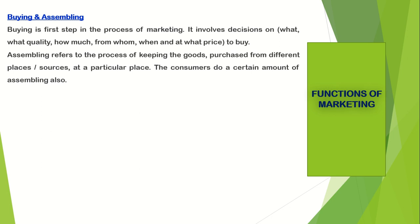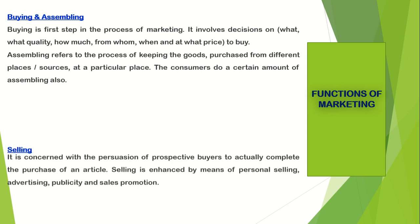The consumers do a certain amount of assembling also. When we buy certain things for our personal requirements from different sources and assemble them together, we do assembling. Assembling is required for all kinds of products whether they are agricultural produce, consumer products, or industrial products.